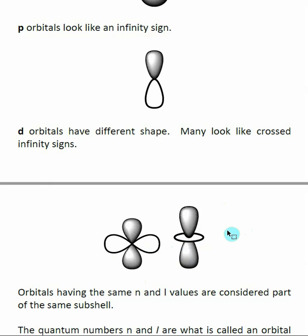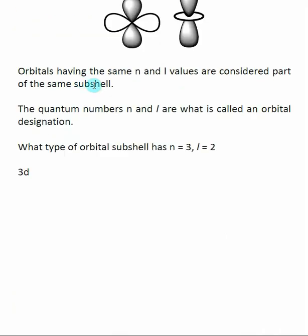Some classes may expect you to memorize these shapes, but you don't need to understand them right now to understand the bonding we'll discuss later. f orbitals exist and have defined shapes, but they are only really used in elements we don't usually discuss in general chemistry, so we'll skip them. Orbitals having the same n and l value are part of the same subshell. Together, n tells you how far the electron is from the nucleus and its energy level, while l tells you what kind of orbital it is.